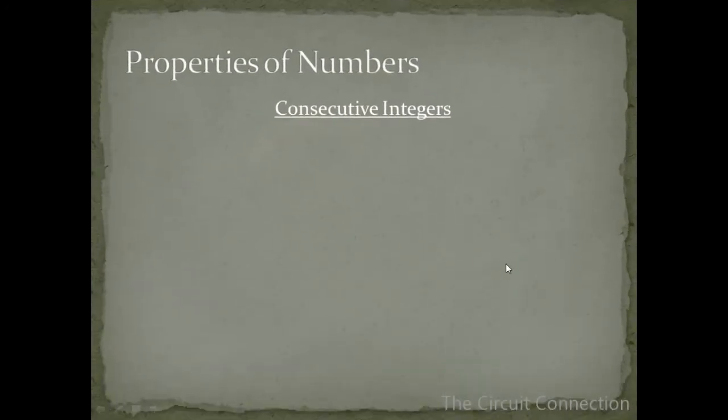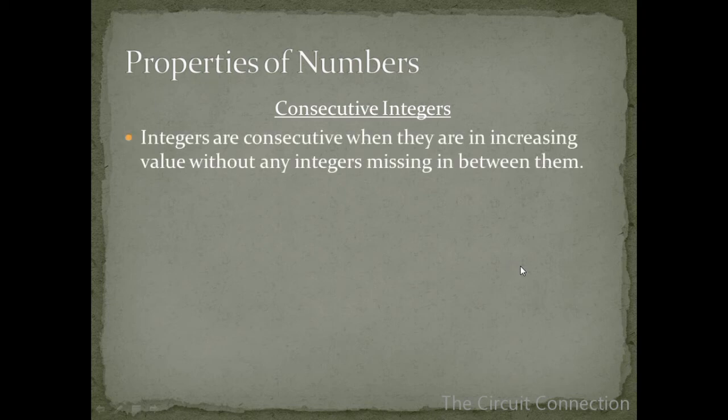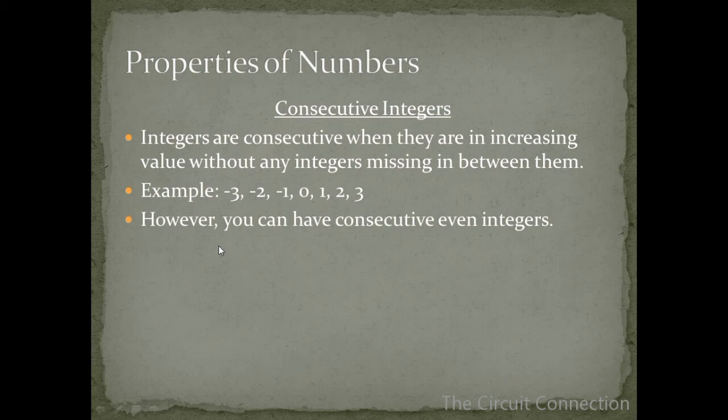Next, let's take a look at a definition for consecutive integers. Integers are consecutive when they are in increasing value without any integers missing in between them. So for example, reading from left to right, negative 3, negative 2, negative 1, 0, 1, 2, and 3 are consecutive integers. They don't have any numbers missing in between them.